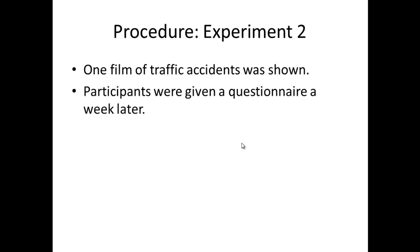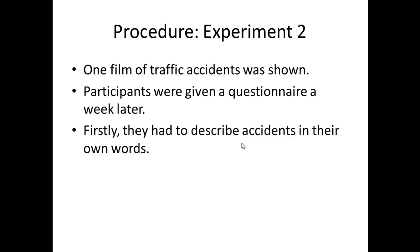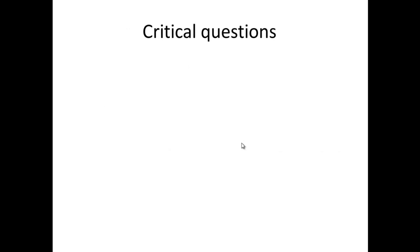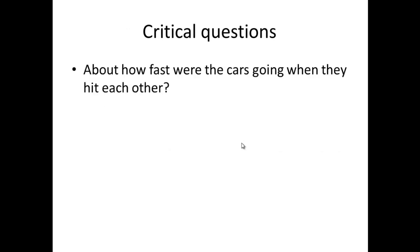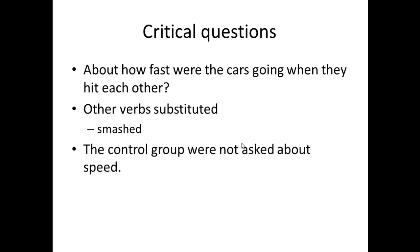After they've seen the crash video, they're given a questionnaire a week later. Firstly, they had to describe the accidents in their own words. Then, just like the first one, they had to answer some questions. And just like before, there is a critical question in there. 50 of the participants had the question about how fast were the cars going when they hit each other. 50 of the participants had the same question but hit was substituted for smashed. And then 50 of the participants were not asked about speed at all.